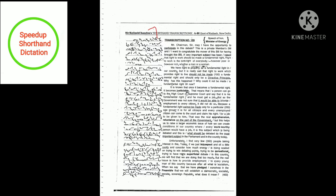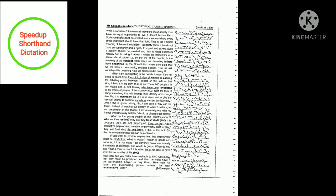after all, what is socialism? When we say that we have pledged ourselves in the preamble that we will establish a democratic, socialist, secular, sovereign republic, what does it mean? What is socialism?